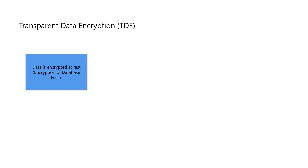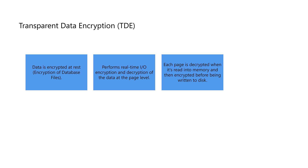Encryption of database files. TDE encrypts data files, log files, and backup files using a database encryption key called DEK. Enabling TDE results in automatic encryption of data when written to disk and decryption when read from disk. This process remains transparent to the application and users, eliminating the need for any modification to utilize the encrypted database.